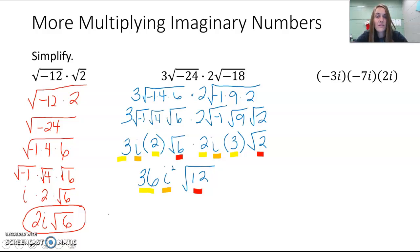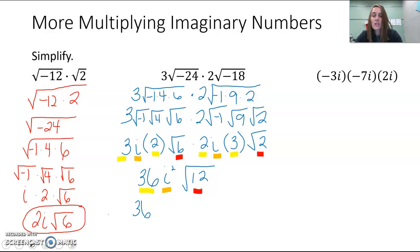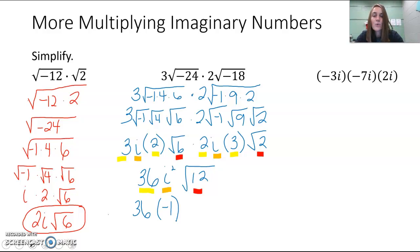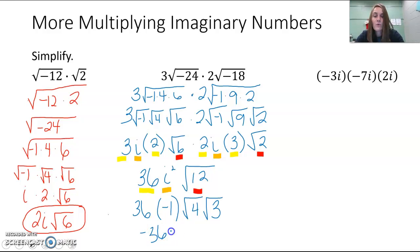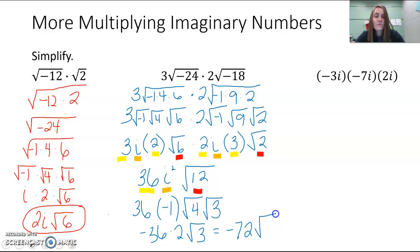But we're not done — we still need to simplify i² and √12. i squared is like taking the square root of negative 1 and squaring it: the square and square root cancel, giving negative 1. Remember, i² = −1 — that's the most commonly seen higher power of i. For √12, use factors 4 and 3 since 4 is a perfect square. So we get 36 times negative 1, which is negative 36, times √4 times √3. √4 is 2, giving us negative 36 times 2 times √3, which is −72√3.